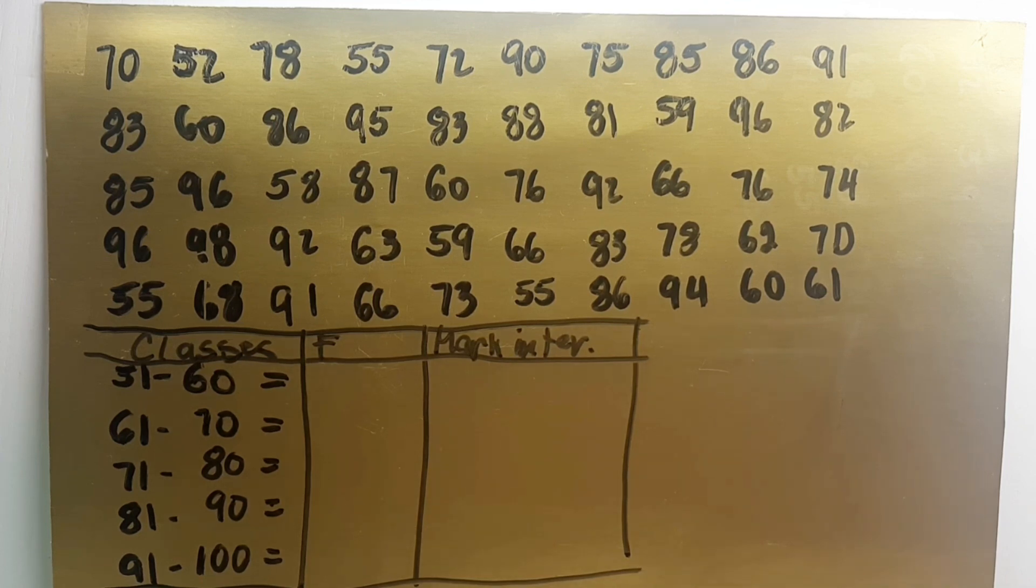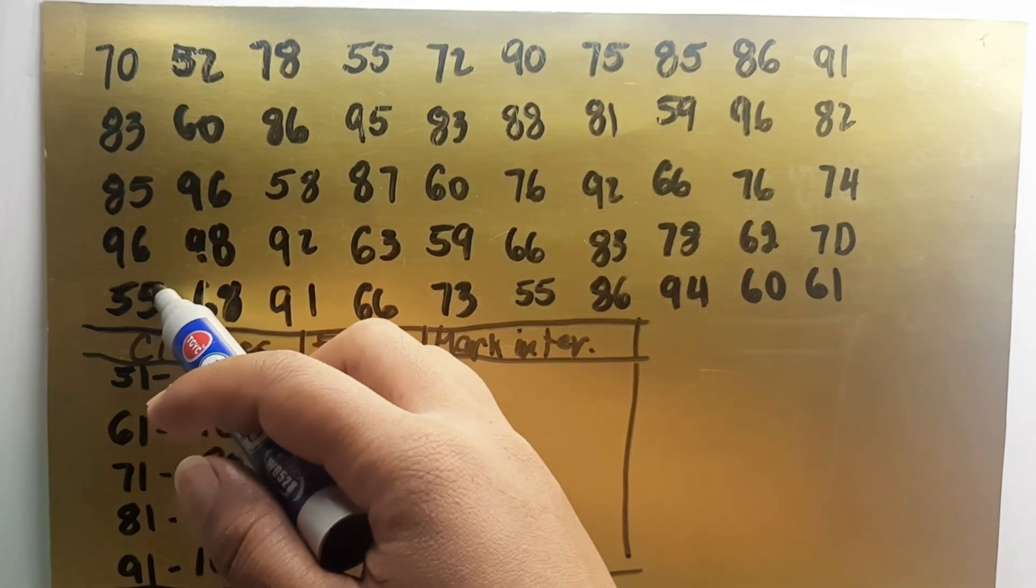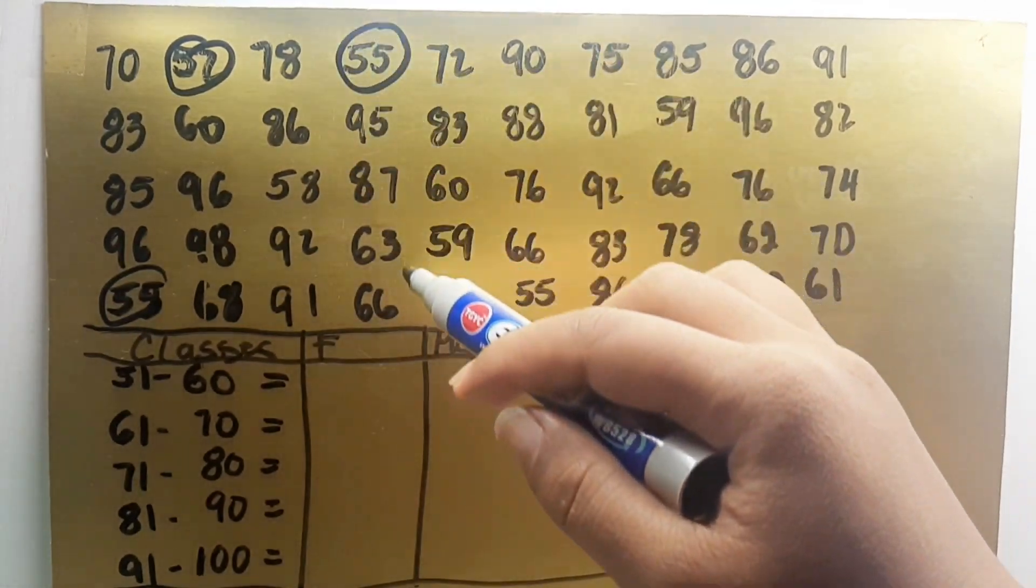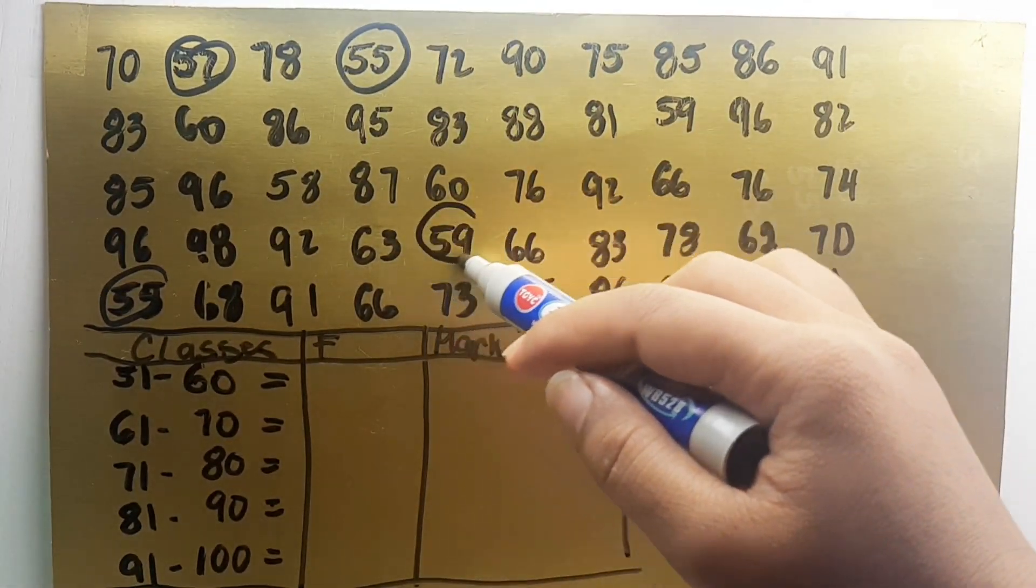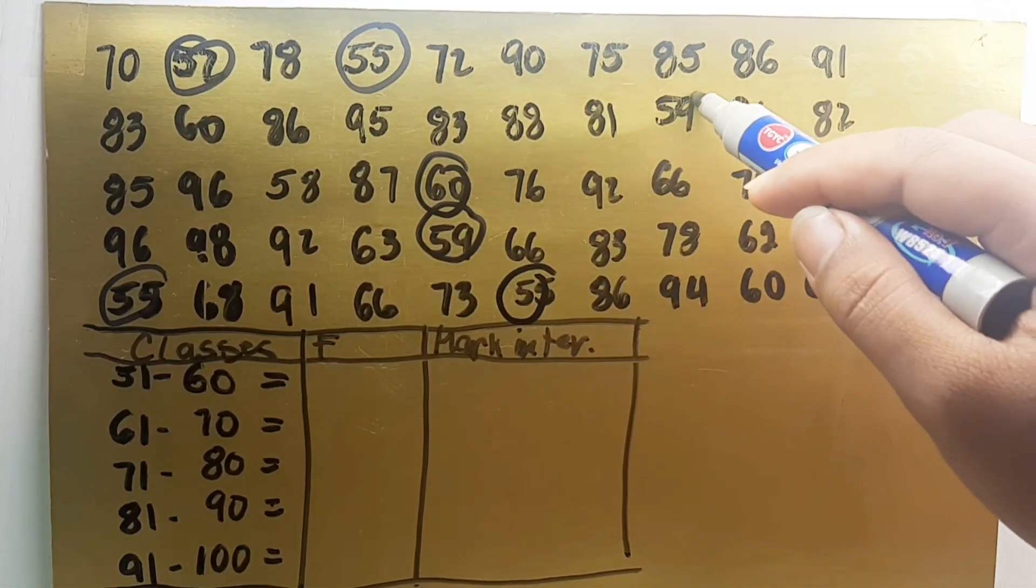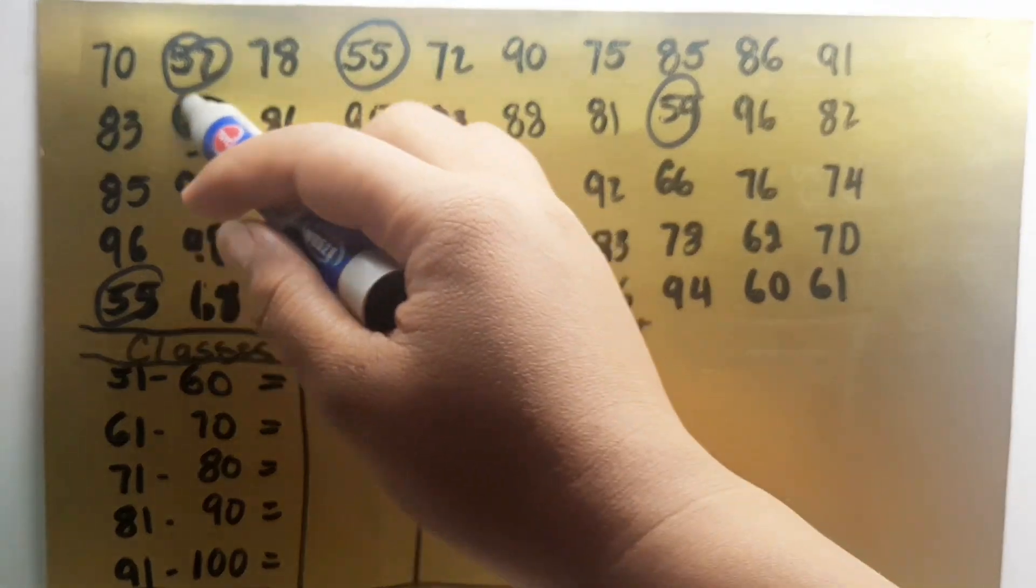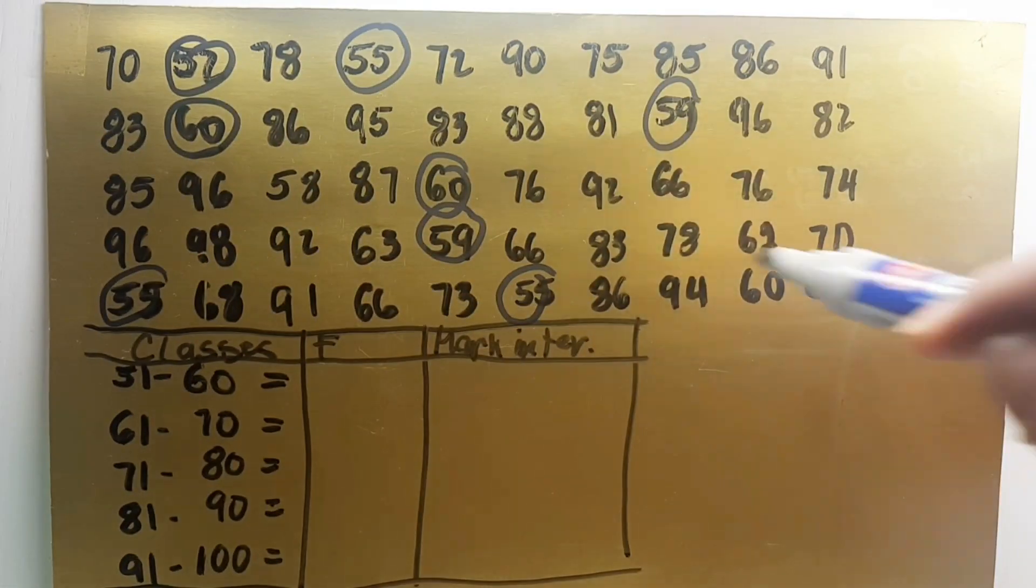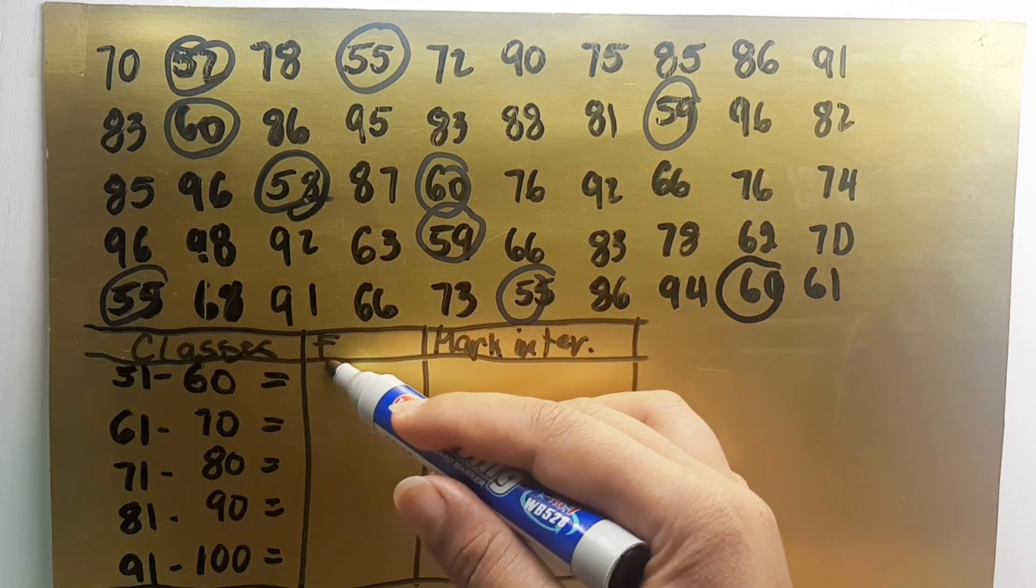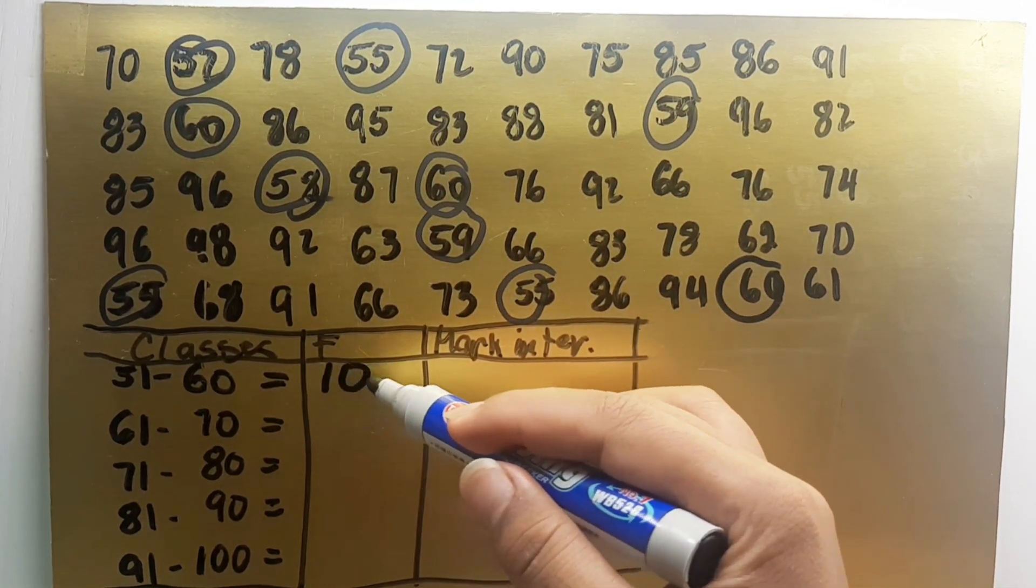So number one is 51 to 60. Here is how to get the frequency. So 1, 2, 3, 4, 5, 6, 7, 8, 9, 10. So it has a frequency of 10 between 51 to 60.